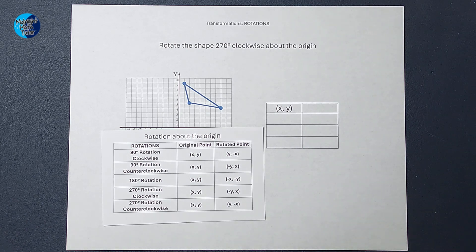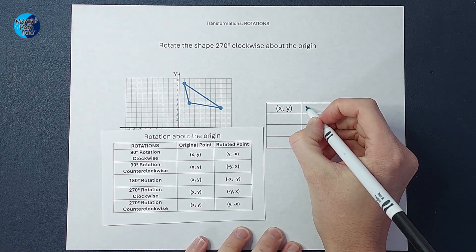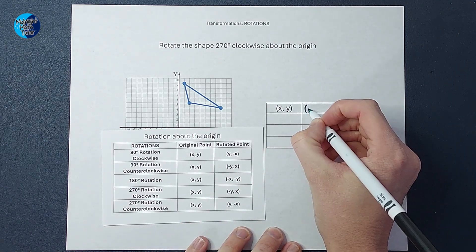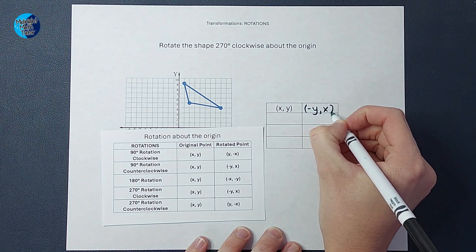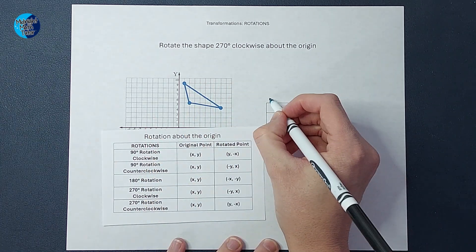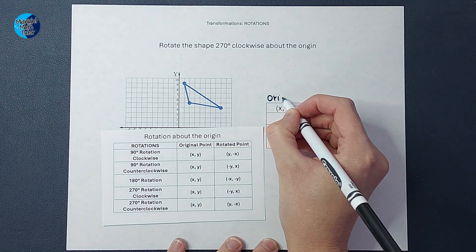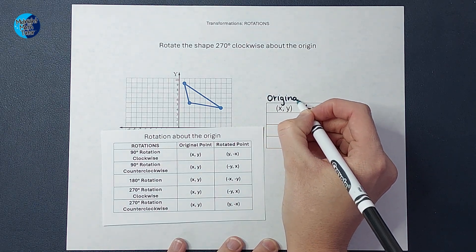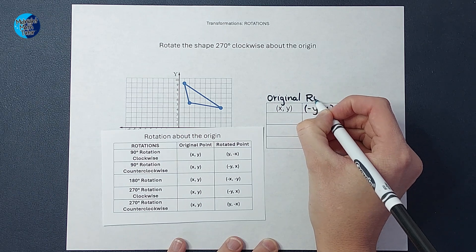So I'm going to make a little note for myself here that to do this, I am going to flip them and change Y's sign. So this column is going to be my original points and here is going to be the rotated points.